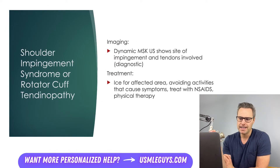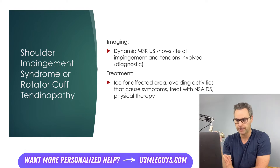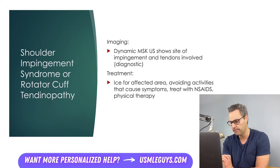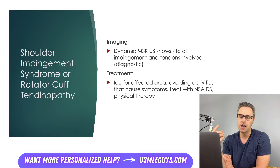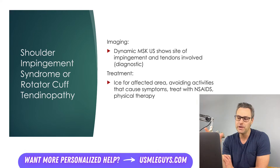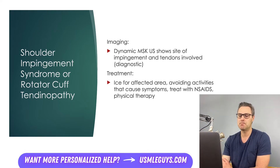Imaging is diagnostic for shoulder impingement syndrome or rotator cuff tendinopathy. Dynamic MSK ultrasound shows the site of impingement and the tendons involved. Treatment includes ice for the affected area, avoiding activities that cause symptoms, NSAIDs for around a week, and physical therapy if it is a bad case.